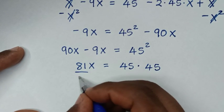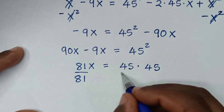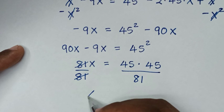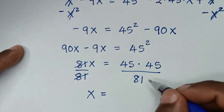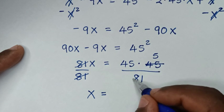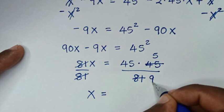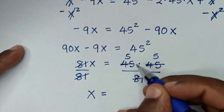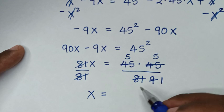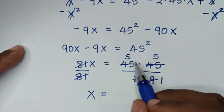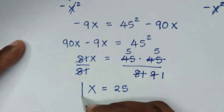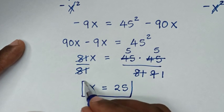To find the value of x, we divide both sides by 81. Simplifying: 45 divided by 9 is 5, and 81 divided by 9 is 9, so we get x equals 5 times 5 over 1, which is 25. So x equals 25 is our final answer.